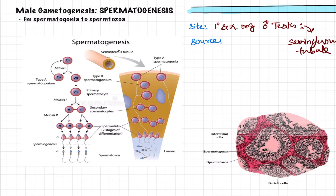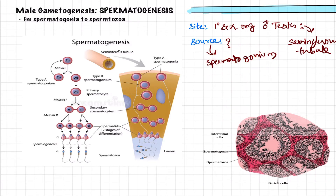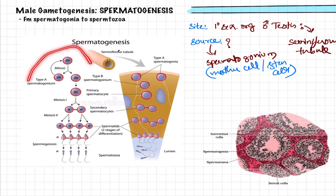The question arises: what is the source in the seminiferous tubules from which spermatozoa are being formed? The answer is the spermatogonium. All sperms are basically produced from the spermatogonium through many cell division processes — either mitosis or meiosis — leading to the formation of sperm. The spermatogonium is also known as spermatogonium mother cells or spermatogonium stem cells.